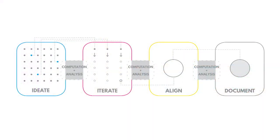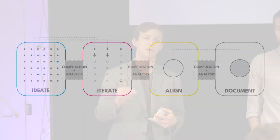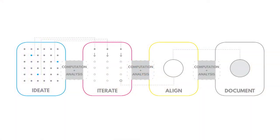Now we're going to talk about a process we've been using for a while that provides a really good framework and system of thought — a clear trajectory as you go through a design problem. It has four phases: ideate, iterate, align, and document. The ideate phase is what we call rapid concept generation — creating as many ideas as possible. This is where you're trying to broaden the conversation, get as much out there as you can, and really anything goes in this phase.